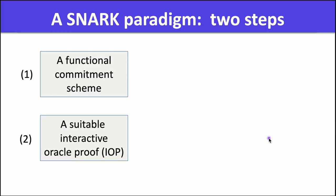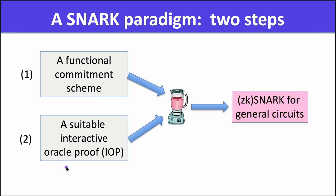For this to be a SNARK, the proof has to be very short—meaning logarithmic in the size of the circuit—and the verifier's work to verify the proof should also be logarithmic in the size of the circuit, although the verifier is allowed to work in linear time in the size of statement x because the verifier at least has to read x. In the last segment we looked at one particular paradigm for building a SNARK, which combines two components.